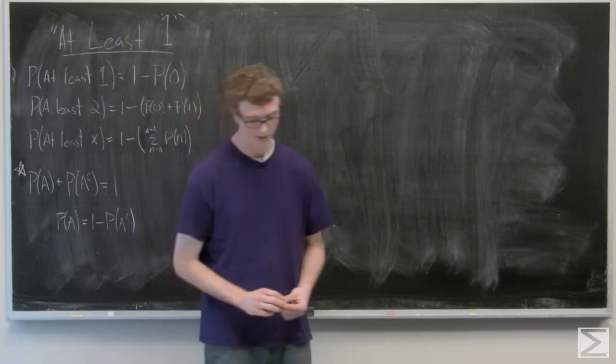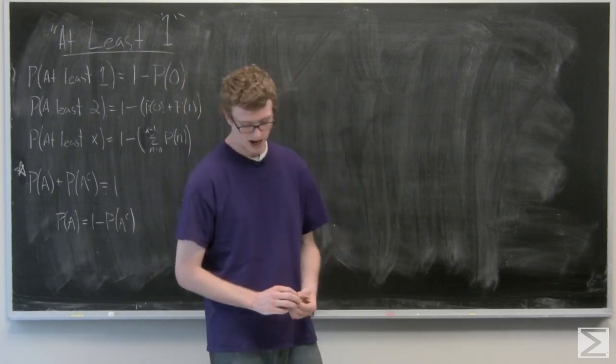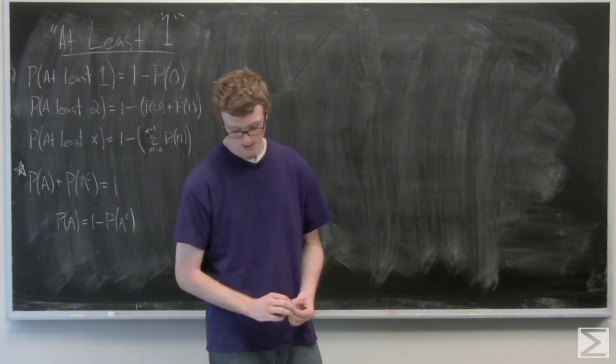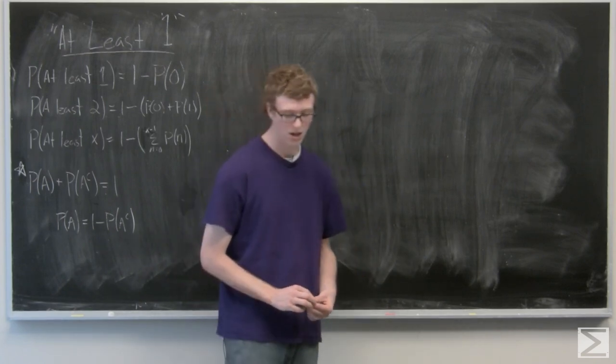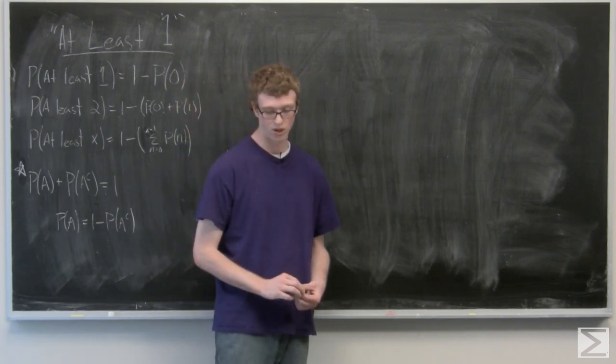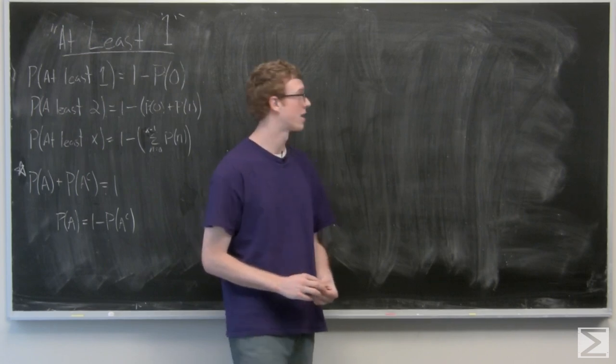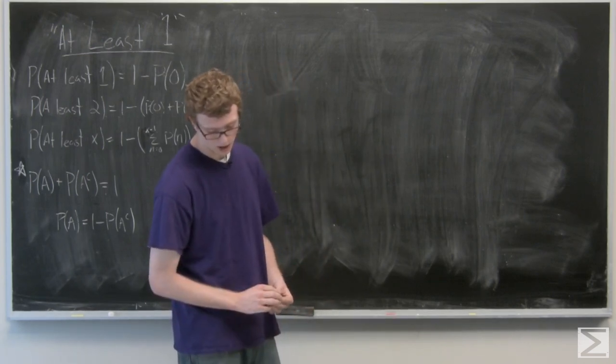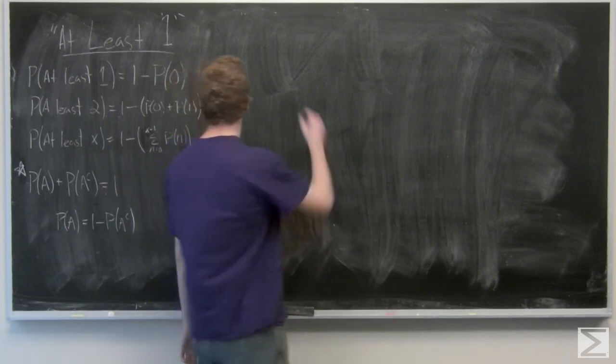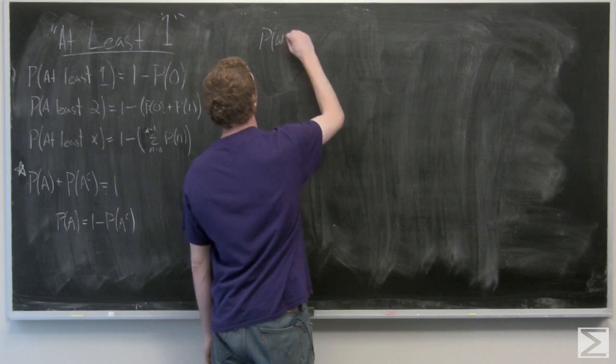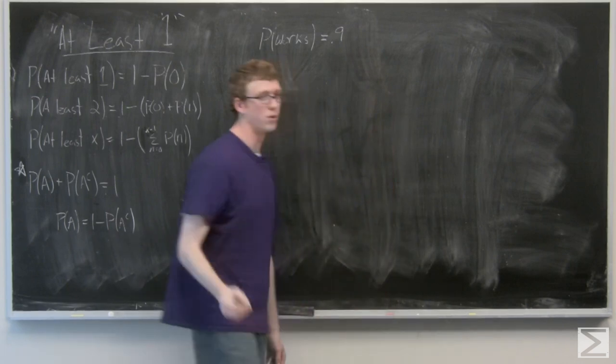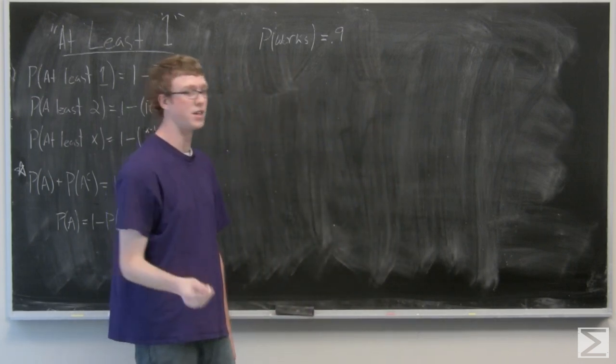The first example states there are three reactors in a chemical plant each independent of the other and each of which has a 90 percent chance of running when an experiment begins. The experiment needs at least one reactor to work. So what is the probability that at least one reactor works? We have the probability of a reactor working is 90 percent or 0.9 and we want the probability that at least one of them works.